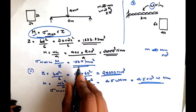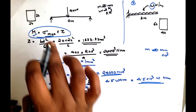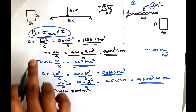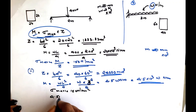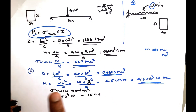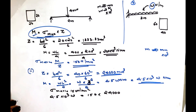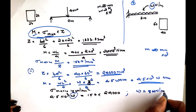We substitute the maximum stress value of 150 N/mm² into the equation: M = σ_max × Z. So 4.5 × 10³ × w = 150 × 24,000. Solving, w = 800 N per meter.